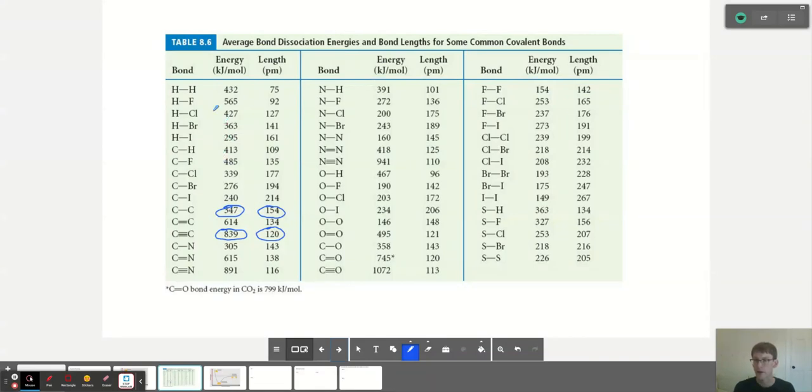Also, you might notice some trends. The smaller the atom, at least within a group, the stronger the bond. So we have in this case HF versus HCl versus HBr versus HI. Hydrogen is the same in all of them, but we're going down the halogens.